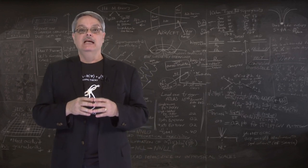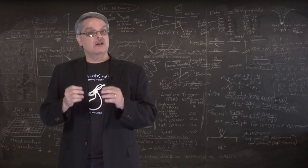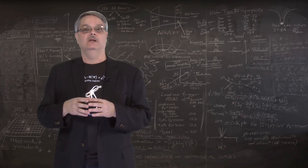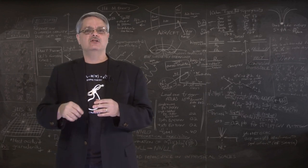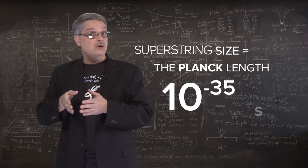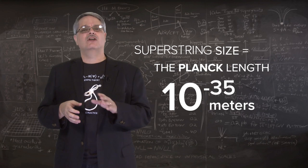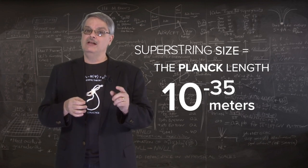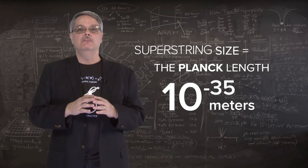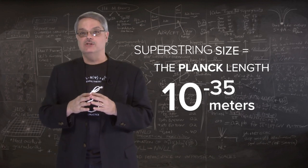The reason is simple. The extra dimensions of superstring theory are incredibly small, much smaller than we can access using our particle accelerators. Physicists imagine that the size of strings might be the Planck length, which is about 10 to the minus 35 meters. That's far smaller compared to a proton than a proton is compared to you. There is no accelerator built or even imagined that can explore such tiny sizes.